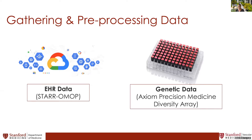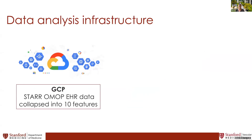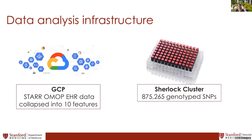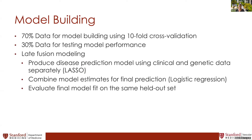Data analysis was performed on Google Cloud. From STARR-OMOP, EHR data was collapsed into 10 features that improve detection of PAD risk. We used the Sherlock cluster for genotype analysis and had over 800,000 SNPs from manual processing through Thermo Fisher, then imputed approximately 17 million more. Model building used standard 70/30 splits and cross-validation to refine prediction, with one held-out test set.